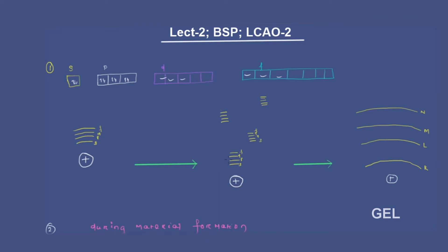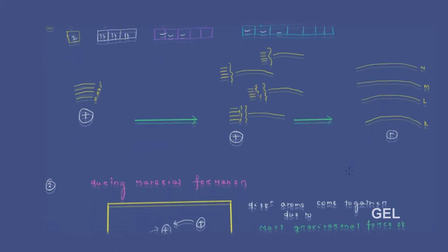All these energy levels can be regarded as one single line. I can represent all these energy levels as a single line, and we give them a name: K, L, M shells. This is the notation for representing these energy levels.